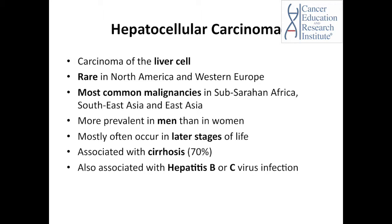Primary tumors are 6 to 10 times more prevalent in men than in women. They develop most often in the sixth decade of life and they're associated with cirrhosis of the liver in 70% of the cases. There's a strong association with chronic hepatitis B infection and an association, though less strong, with hepatitis C infection.